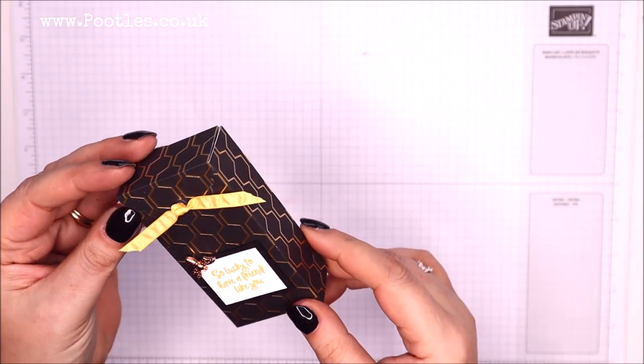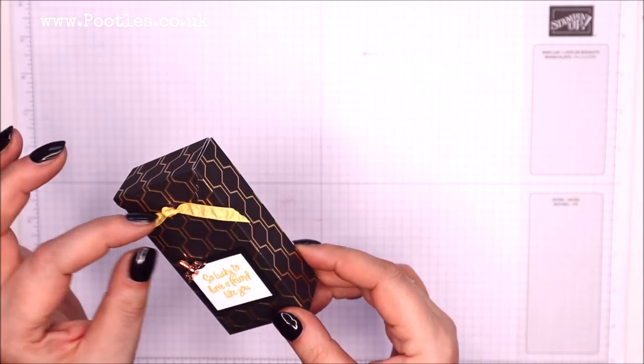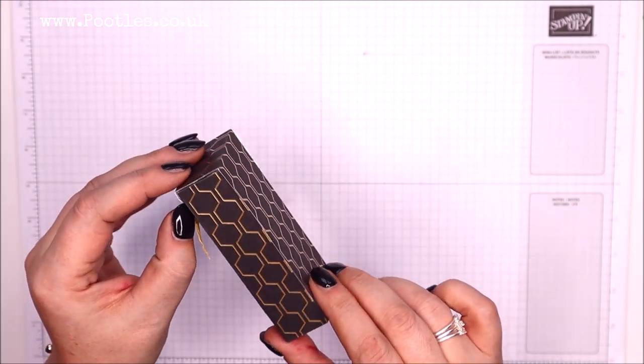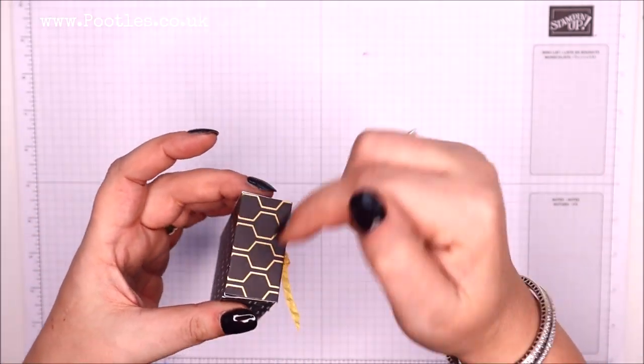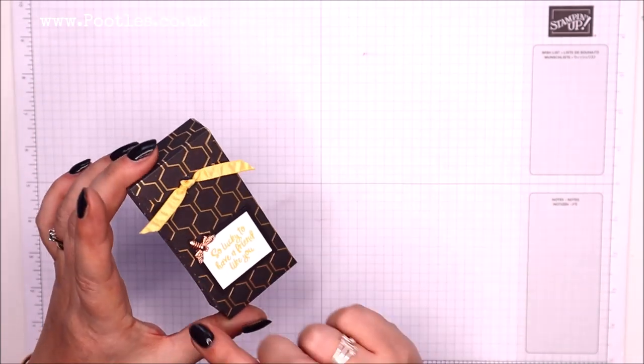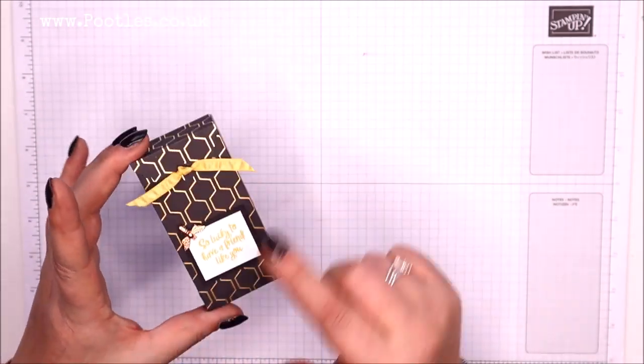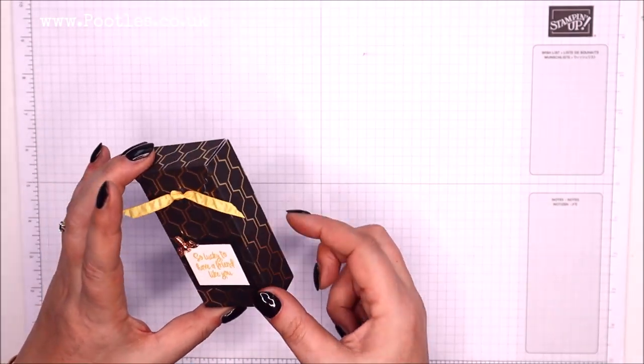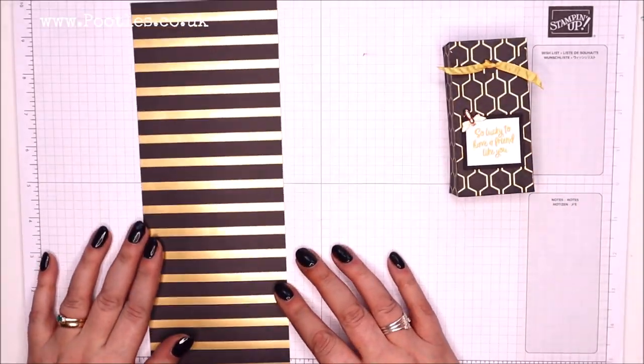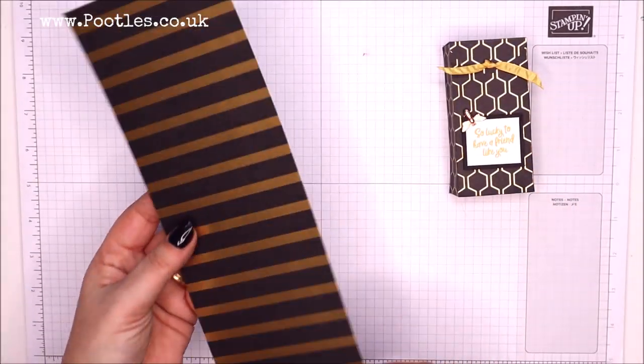Today's project is an ornate tag topper box with a little bow that keeps it shut and opens at the top. It finishes up four inches by two inches by one inch, so ten centimeters by five by two and a half, and you can get three from a sheet of designer series paper.